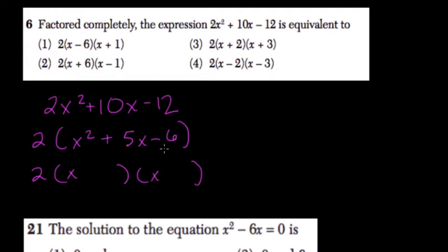The common strategy for most people at this point with these types of problems is find factors of negative 6 that add up to positive 5.